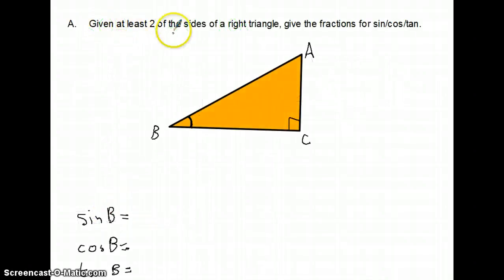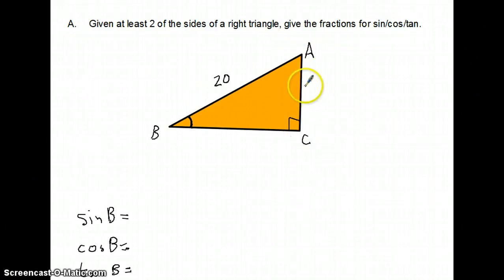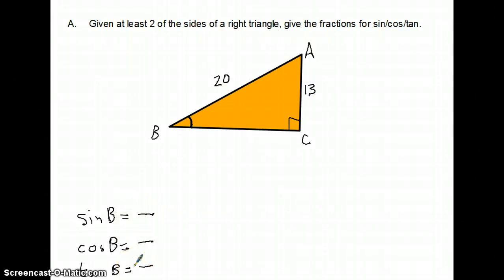If we're given two sides of the triangle, we can find all of that. I'll make this a little interesting — let's say the hypotenuse is 20, and this other side is 13, just to make it ugly. All of these ratios are going to require that I know two different sides. There is one ratio that already has these two sides in it, so I get lucky on one. For the other two, I'm going to need the missing side. We'll talk about how to do that.